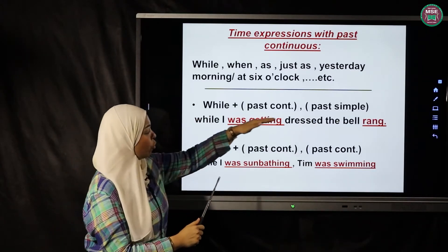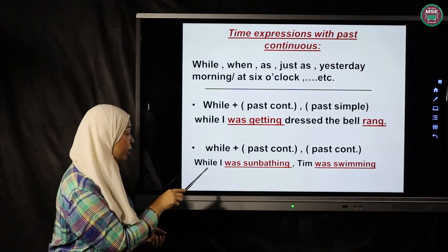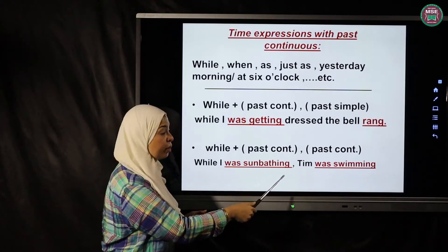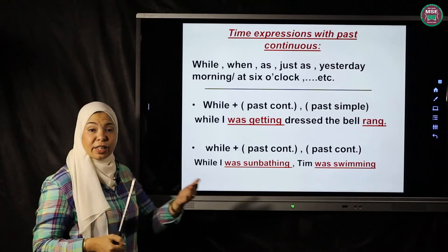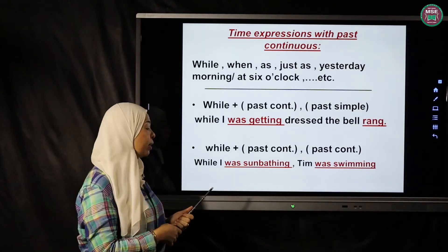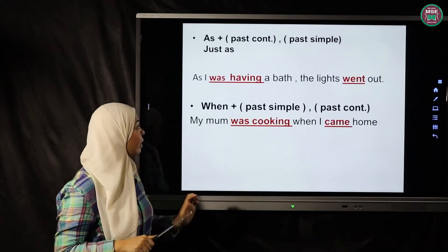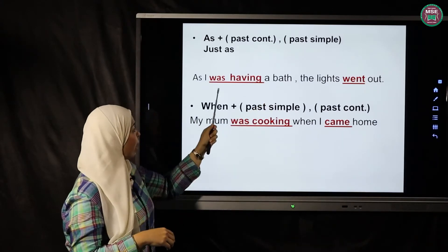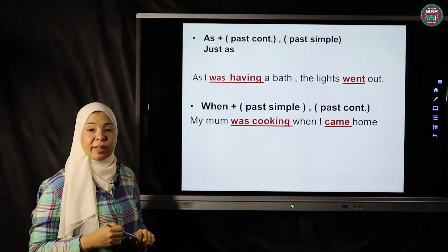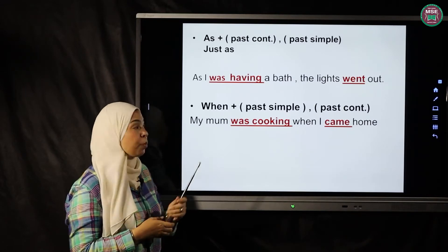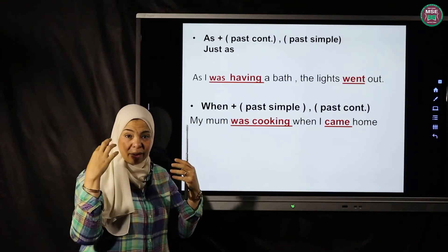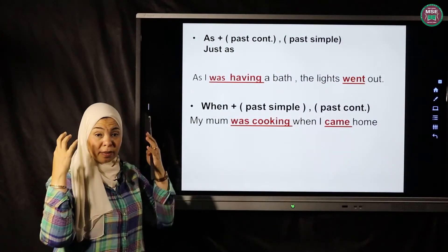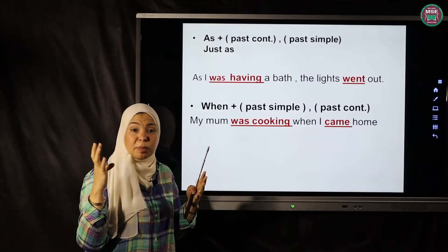'As' also should be followed by past continuous, with the other verb in past simple: 'As I was having a bath, the lights went out.' Note: 'having a bath' means taking a bath — it differs from 'have' meaning to own. 'When' plus past simple: 'when' should be followed by a simple tense. Because we're explaining past, 'when' + past simple. The other action is past continuous: 'My mom was cooking when I came home.' 'When' introduces the short action; it can appear in the middle or beginning of the sentence.